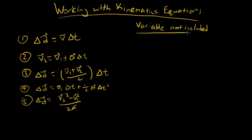We use each equation based on which variable is missing from the question. Equation one is a special case used when there is constant velocity — no acceleration involved.